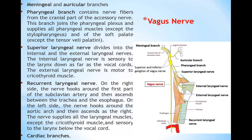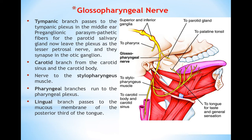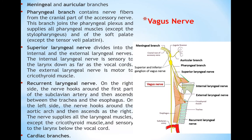Tenth, the vagus nerve is the longest cranial nerve and the only cranial nerve that sends branches reaching the thorax and abdomen. It has meningeal and auricular branches. The pharyngeal branch contains nerve fibers from the cranial part of the accessory nerve. This branch joins the pharyngeal plexus, which is responsible for innervation of all the pharyngeal muscles except the stylopharyngeus muscle, which is supplied purely by the glossopharyngeal nerve. The pharyngeal plexus is formed from the cranial part of the accessory nerve and the vagus nerve.